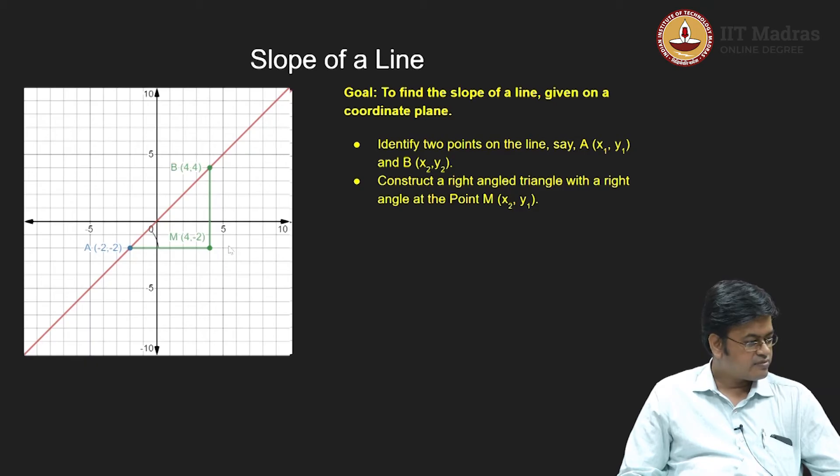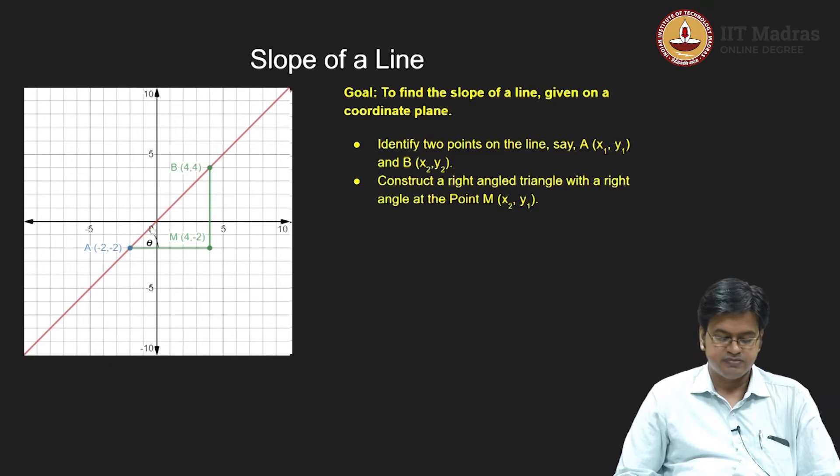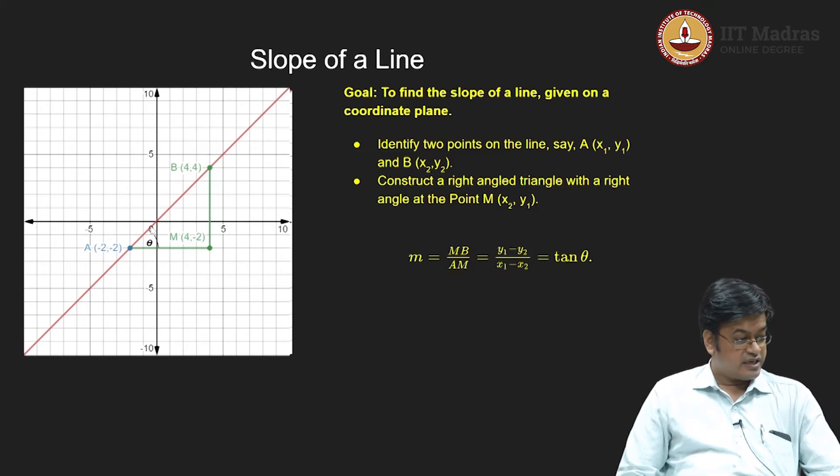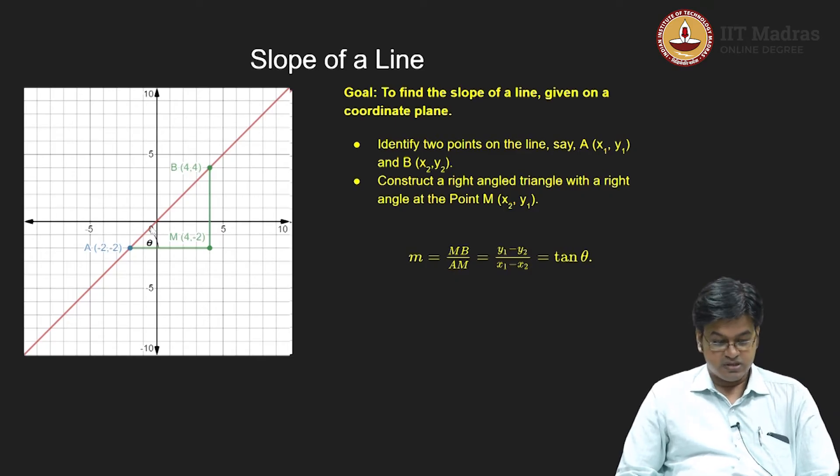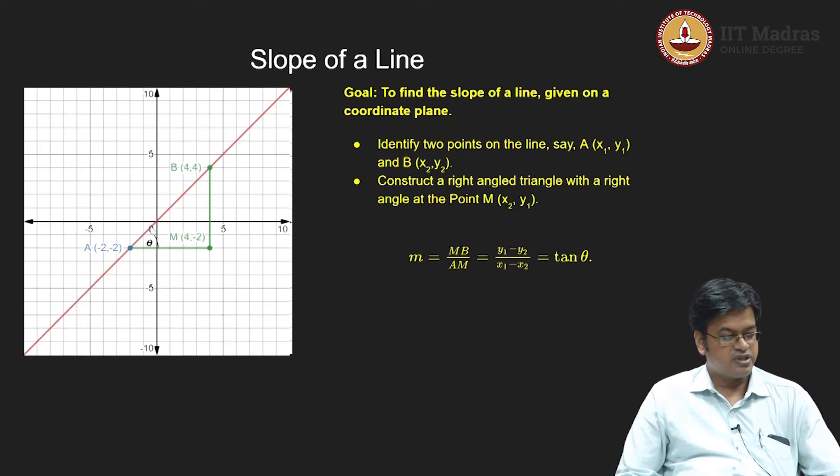For example, when I constructed this right angle triangle, there is some angle formed over here, this arc denotes that angle. Let us call that angle as theta. Now what I am saying is change in y upon change in x, but can you relate some quantity related to this trigonometric ratio that is tan of theta. So what I can say is my m or the slope of a line is m which is y1 minus y2 upon x1 minus x2 and which is also equal to tan theta. So I have introduced two, I have defined one thing that is m which is the ratio of these two, but which in turn turned out to be equal to tan theta.